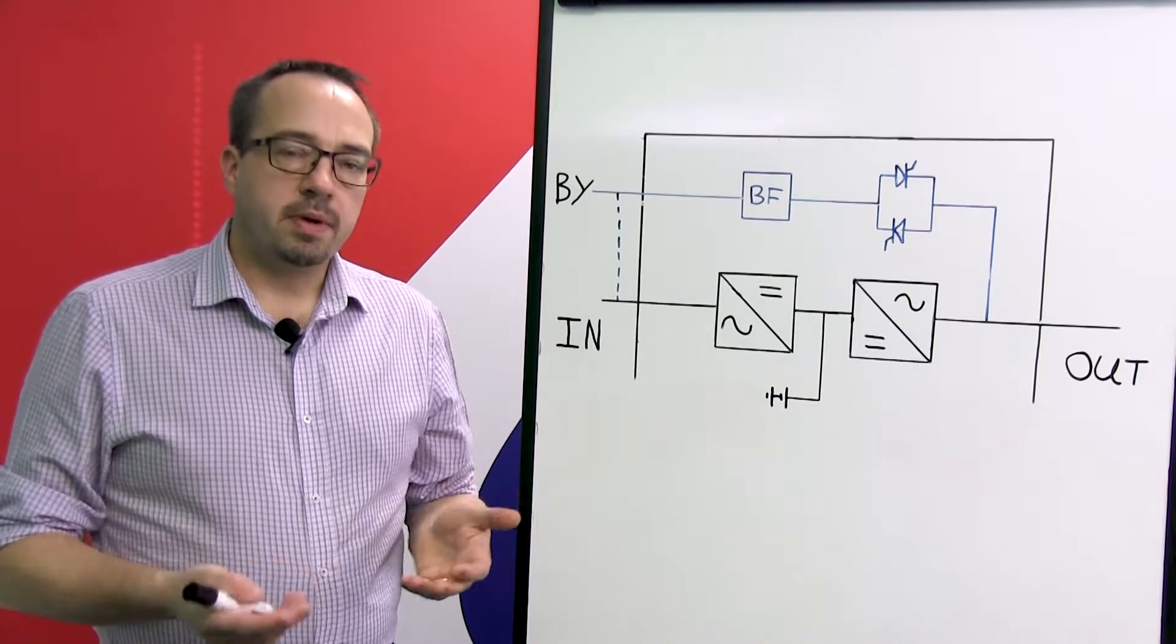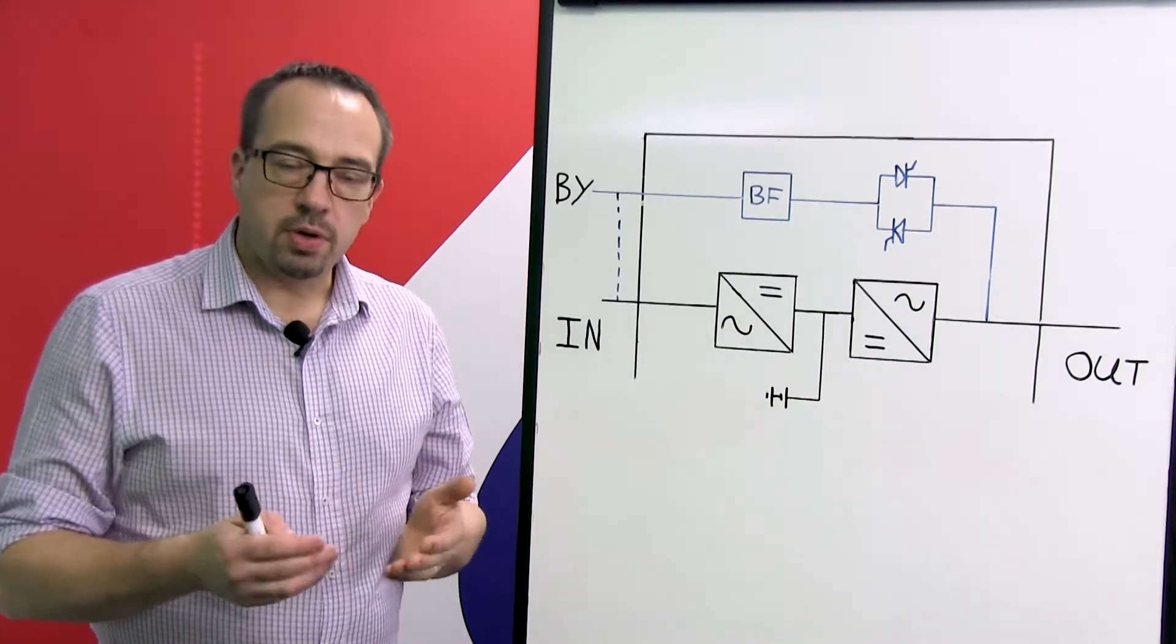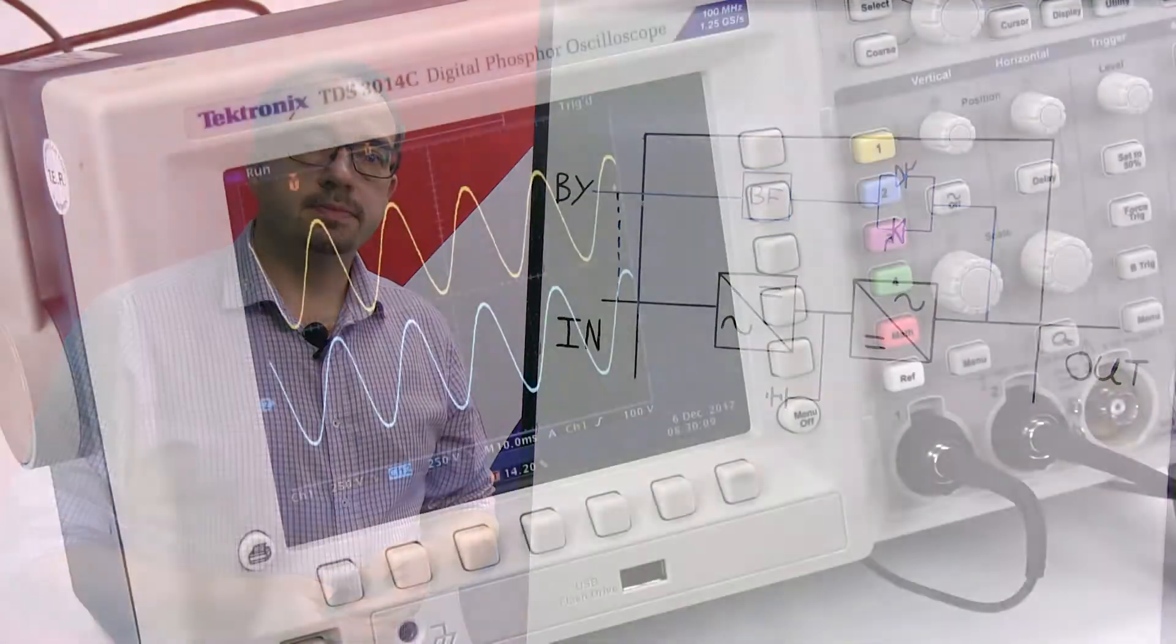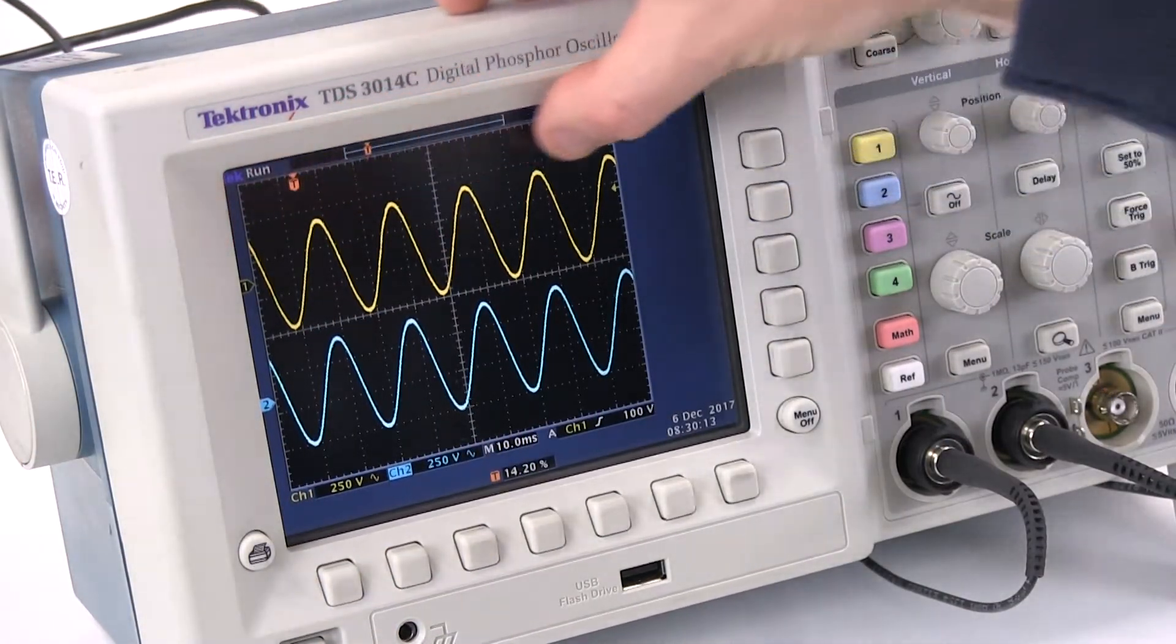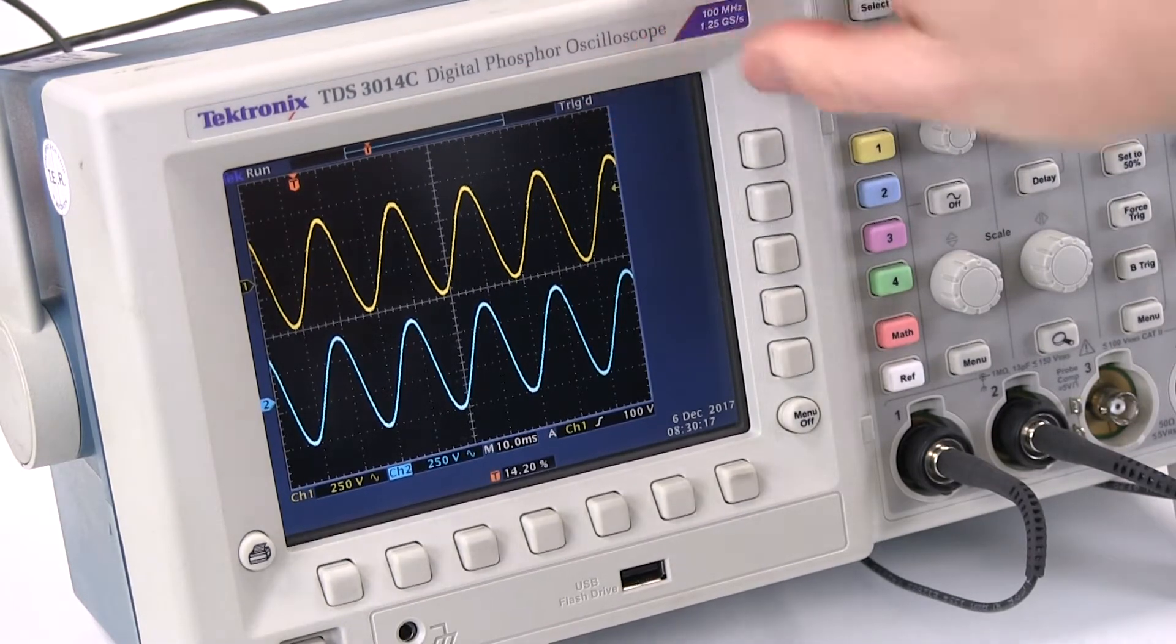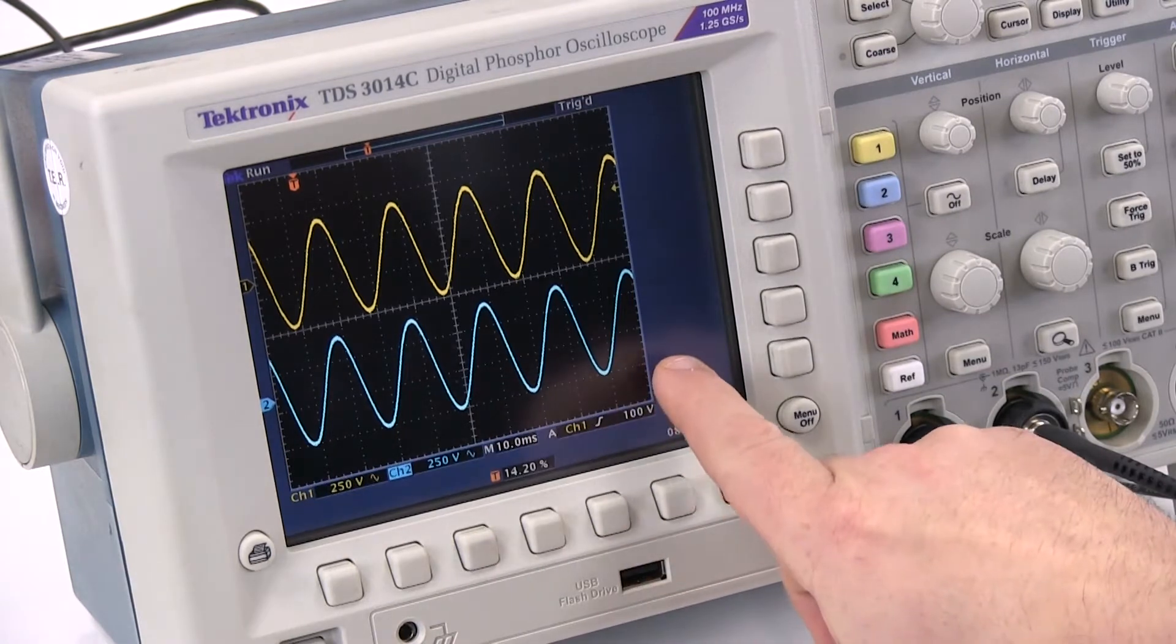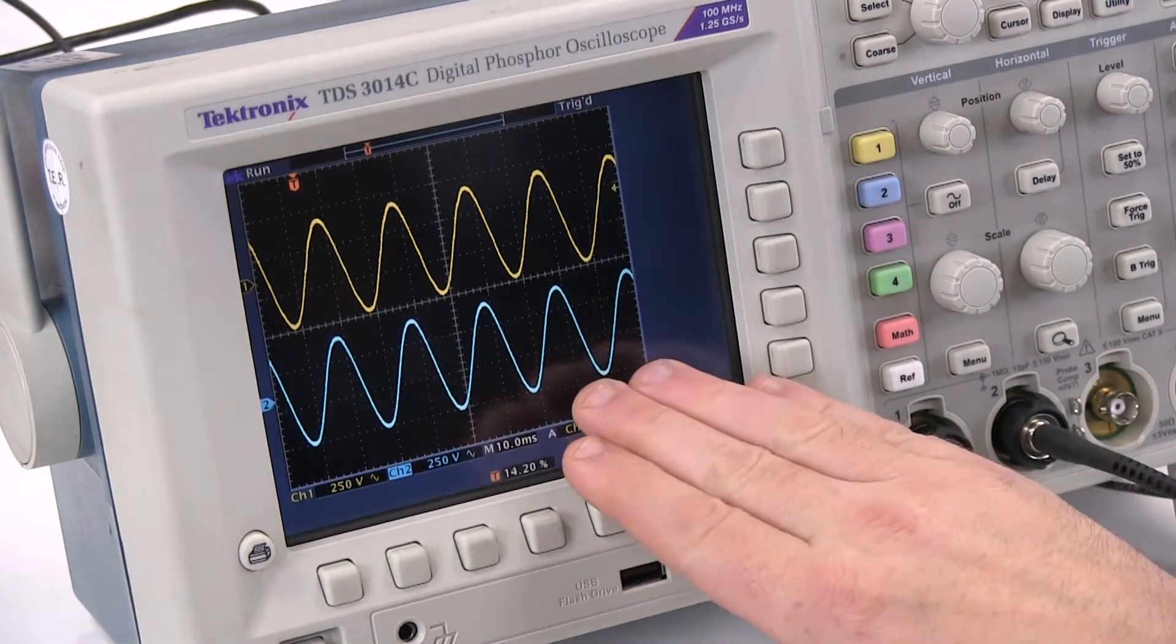Now exactly what do I mean by no break? Well, if we take a look at the oscilloscope I can show you in a little bit more detail. If we take a look at the oscilloscope here, the waveform across the top is effectively the main supply coming into the UPS. The waveform along the bottom is the waveform supplied to the critical load and hence the protected side of the UPS.